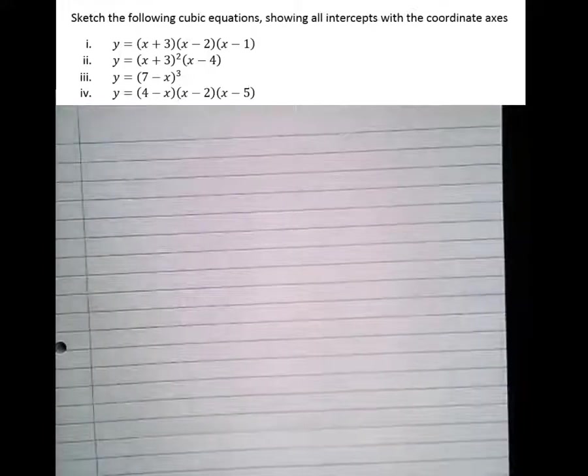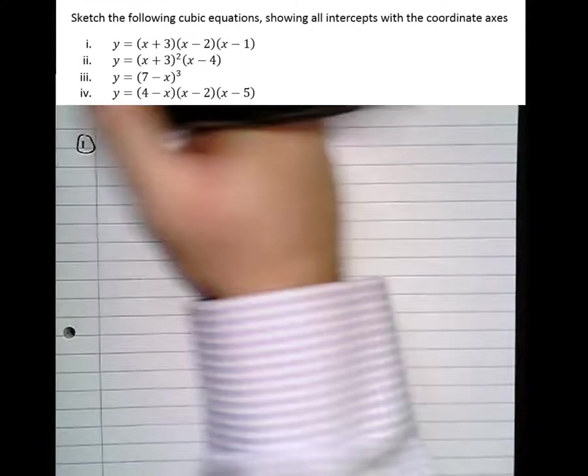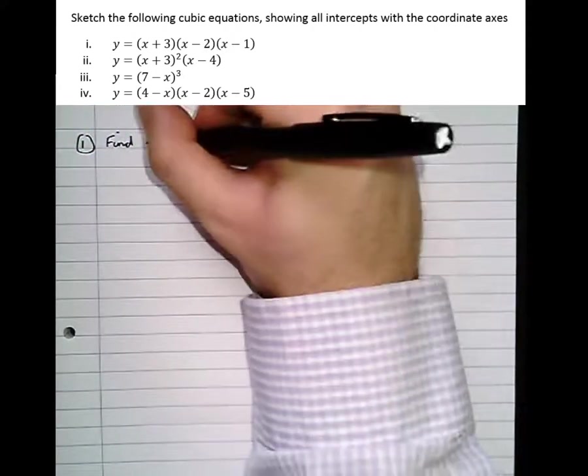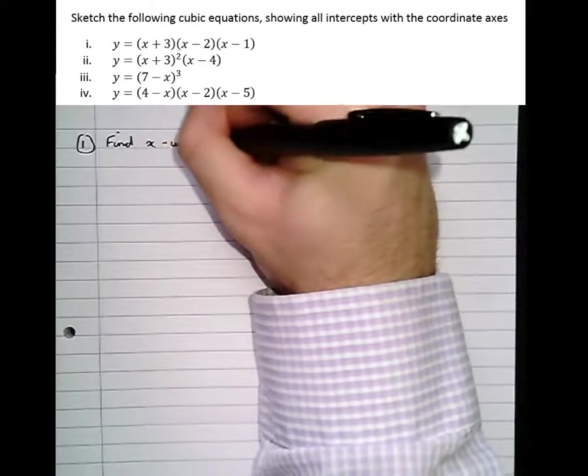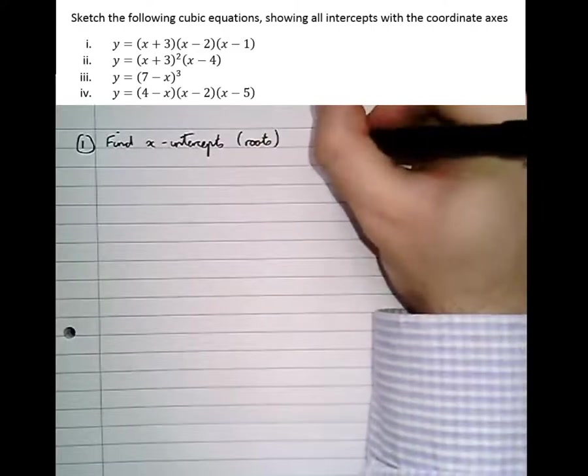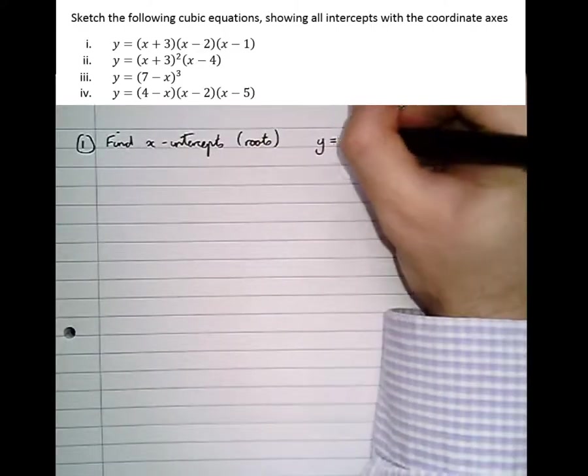In my opinion, this is a four-step process. Step one, find the x-intercepts or roots as they're called, and they occur when y equals zero.